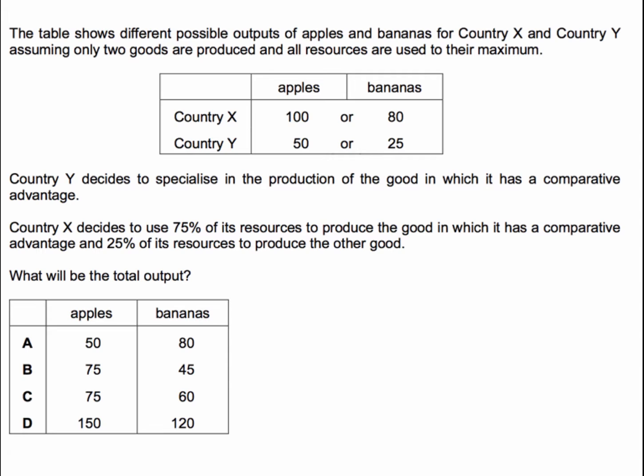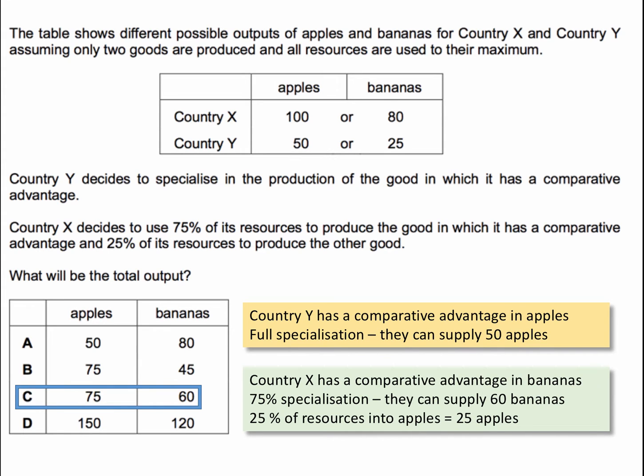Country Y has a comparative advantage in apples — it's half as good at producing apples, but only 5/16ths as good at producing bananas. So Country Y will produce apples only, meaning it will produce 50 apples. Country X has a comparative advantage in bananas. It's going to allocate three quarters of its resources to bananas, so output goes down from 80 to 60. With 25% of resources on apples, it will produce 25 apples. So the answer is C: Country Y supplies 50 apples with full specialisation, and Country X produces 60 bananas and 25 apples — 75 apples in total and 60 bananas.